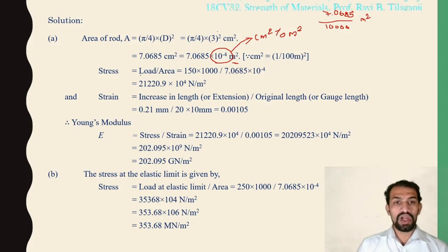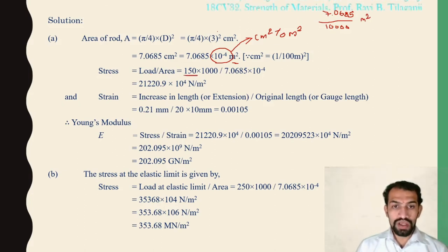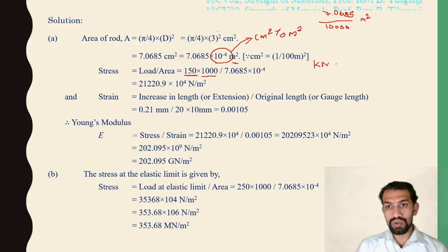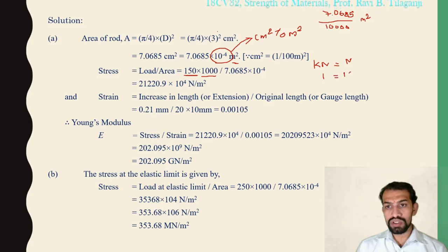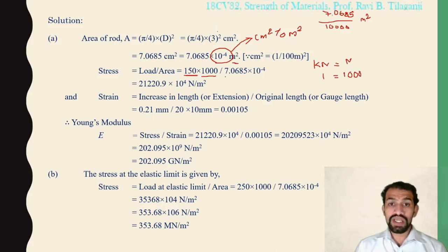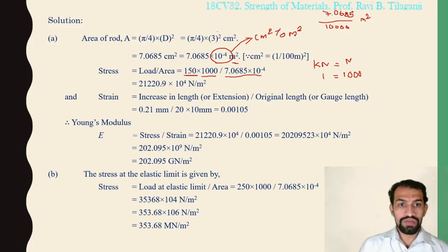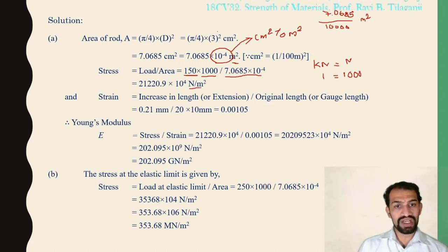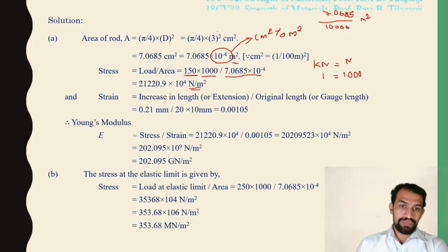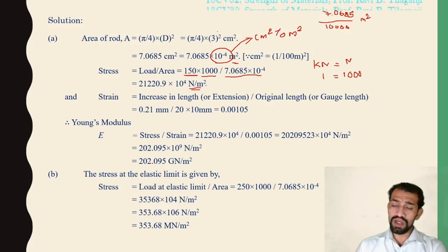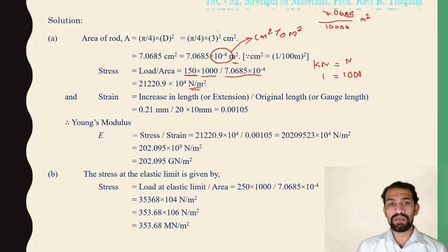Stress = Load / Area. The load at 150 kilo-Newtons equals 150,000 Newtons divided by 7.0685 × 10⁻⁴ m², giving the stress in Newton per meter square. You can keep the area in meter square to get correct SI unit values.